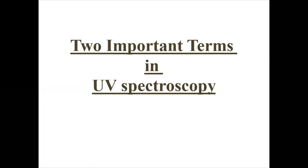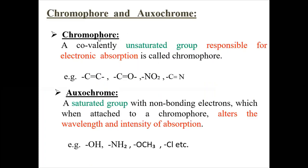First we will see two important terms: chromophore and auxochrome. A covalently unsaturated group responsible for electronic absorption is called a chromophore. It means some functional groups which have an unsaturated covalent bond — which itself is responsible for color, or electronic absorption in UV spectroscopy — are known as chromophores.